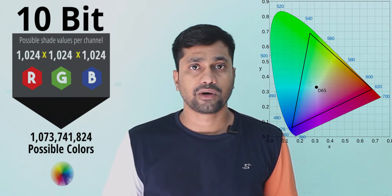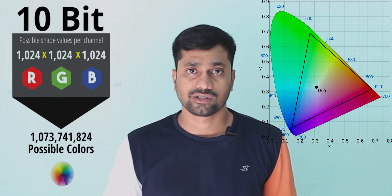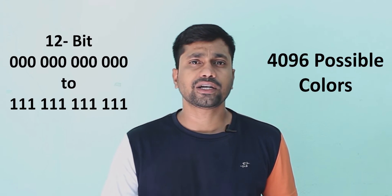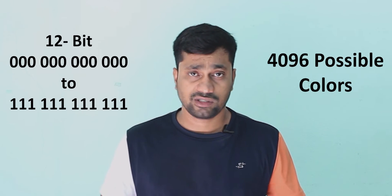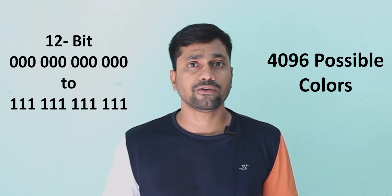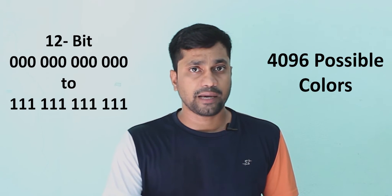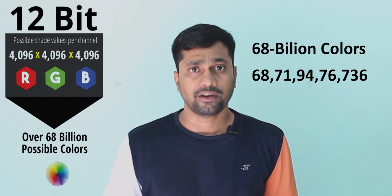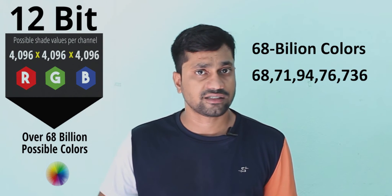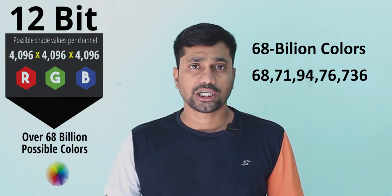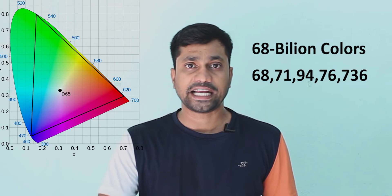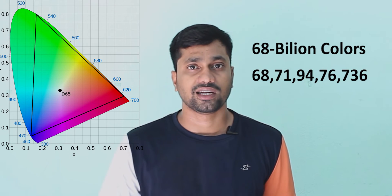The possible number for 10-bit is approximately 107 crore possible colors. RGB x 1024 x 1024 x 1024 — the color space is the same. For 12-bit color depth, the possible numbers use 12 zeros and 12 ones. The combination of the possible value is 4096. E4096 same as RGB x 4096 x 4096 x 4096, giving approximately 68 billion possible colors.